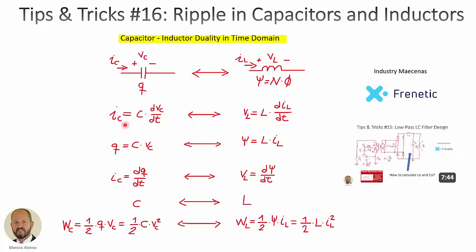We can see that in this differential equation, if we substitute current by voltage and voltage by current, we get the equivalent differential equation for the case of the inductor. Another equivalence: the charge stored in the capacitor is equal to the capacitance times the voltage across the capacitor. So charge is dual to the flux linkage in an inductor. The flux linkage is the inductance times the current through the inductor. Again, if we substitute voltage by current, capacitance by inductance, and charge by flux linkage, we have this equivalent equation.